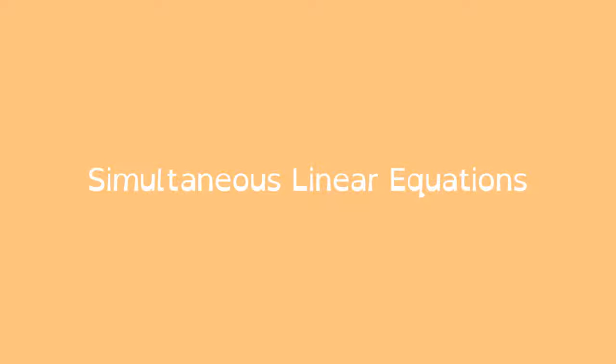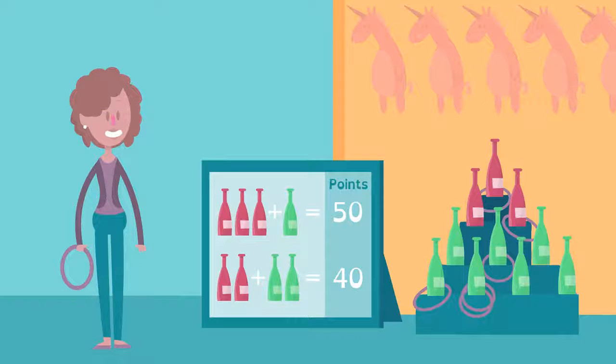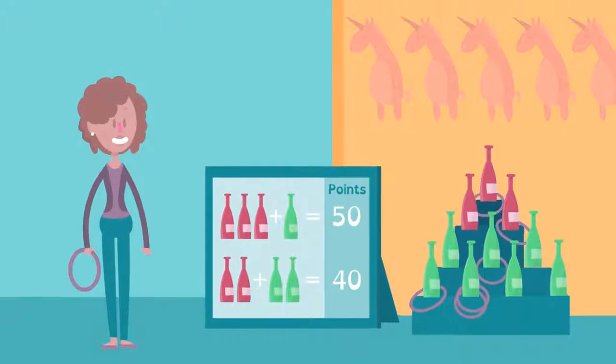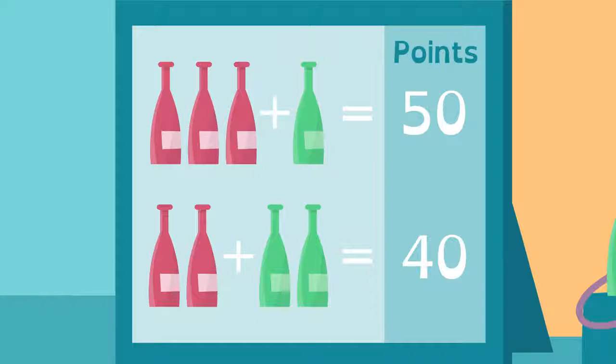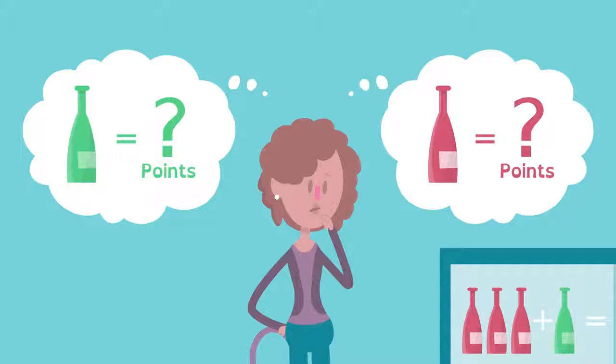Here's how simultaneous linear equations work. Kate can win points by tossing rings around these bottles. Different color combinations are worth different points. Kate wants to know how much each bottle is worth on its own.